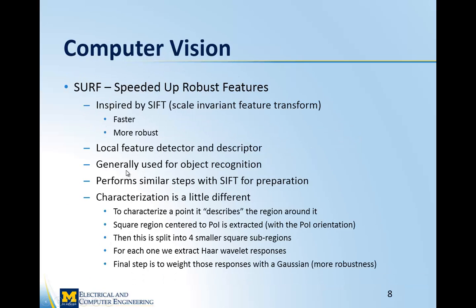The computer vision aspect uses SURF, the most important algorithm in this project, which is an advanced version of SIFT — actually inspired by SIFT. SURF stands for Speeded Up Robust Features and is described as faster and more robust. It is a local feature detector and descriptor, generally used for object recognition. It performs similar steps to SIFT — difference of Gaussians, extrema points, and eliminating weaker points of interest — but the characterization part is different, which gives it the capability of being more robust and faster.